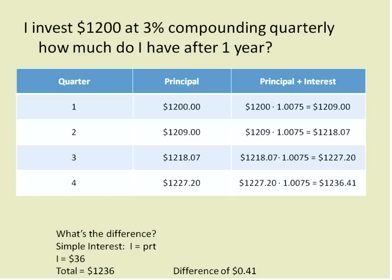For a quick comparison: if I just invested $1,200 compounding once over the course of that year, I would have had $36 interest for a total of $1,236. So the difference with compounding quarterly versus annually was $0.41 for $1,200 invested at 3%. Remember, last time we had a difference of $11 over five years. The more times it compounds, the more money you'll make, and the more you invest the more you get back in interest. I hope this video has been helpful in showing you how to calculate compound interest. Thank you very much.